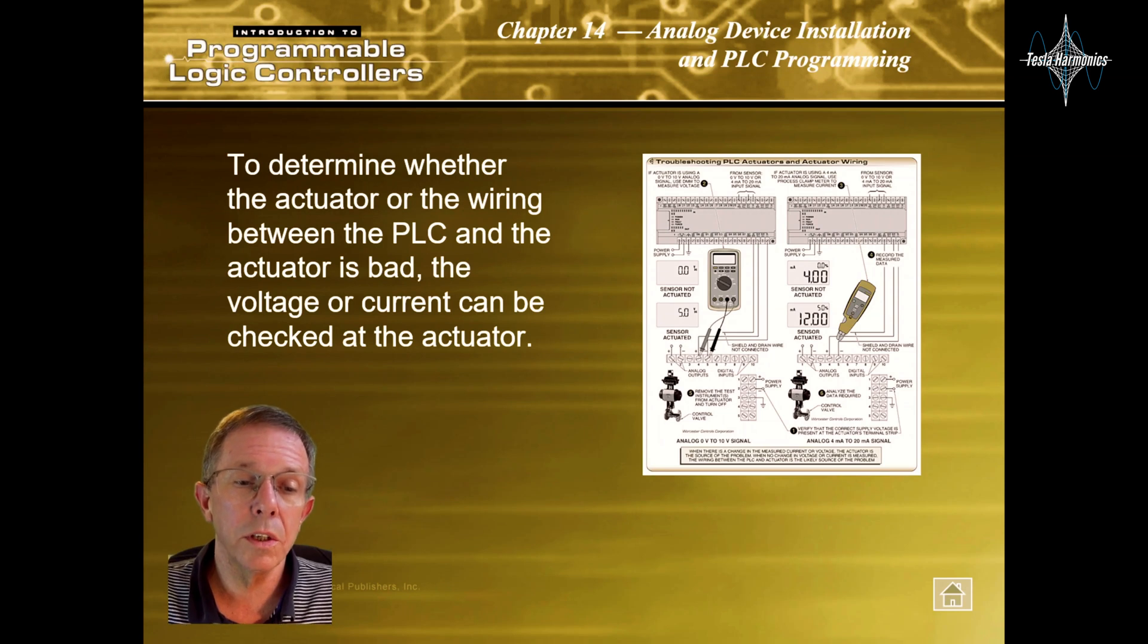To determine whether the actuator or wiring between the PLC and the actuator is bad, the voltage or current can be checked at the actuator.